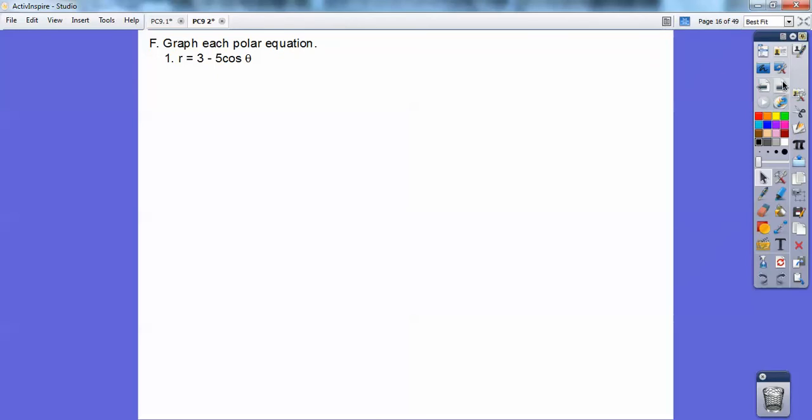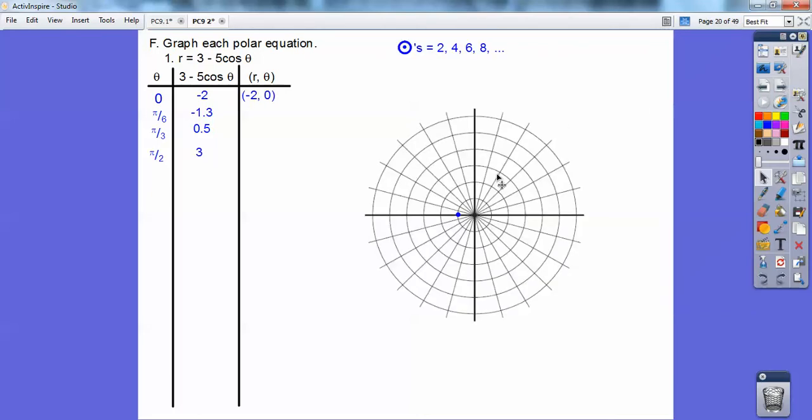All right, so graph each polar equation. So we'll do the same thing. Set up a t-chart, and when I plug in—and I'm doing in terms of pi right here—I plug them in, and I get those values right there. That's equal to my r right there. So my r is negative 2, 0.